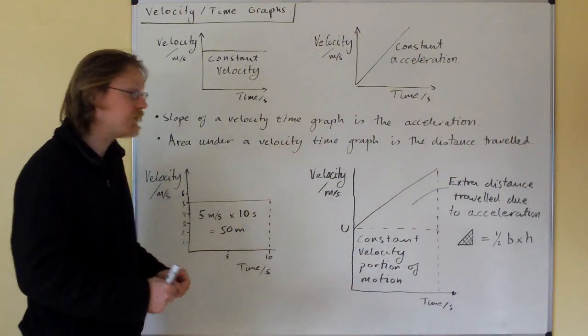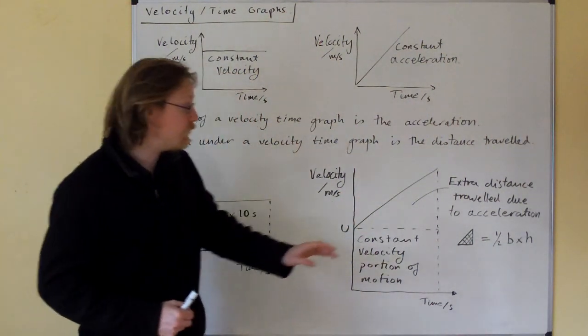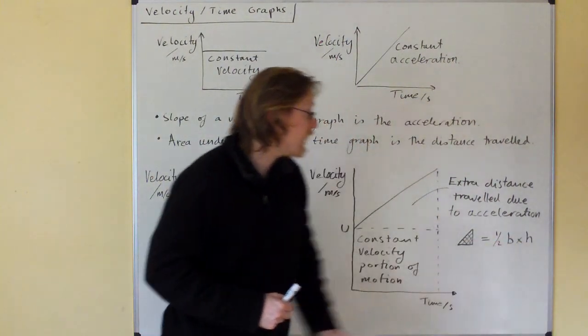And we also have this triangle here, which is the extra distance travelled due to the acceleration. And we find the area of this triangle using the formula that the area of the triangle is half base times height.